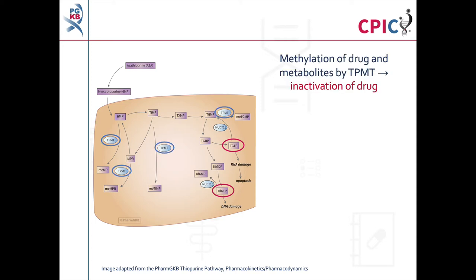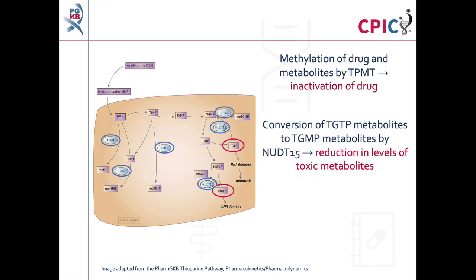The TPMT protein encoded by the TPMT gene inactivates mercaptopurine and several metabolites by methylation, reducing the number of molecules available for conversion into active thioguanine nucleotide metabolites. The NUDT15 protein encoded by the NUDT15 gene converts active thioguanine nucleotide metabolites to inactive thioguanine nucleotide metabolites, thereby reducing the level of cytotoxic active thioguanine nucleotide metabolites.